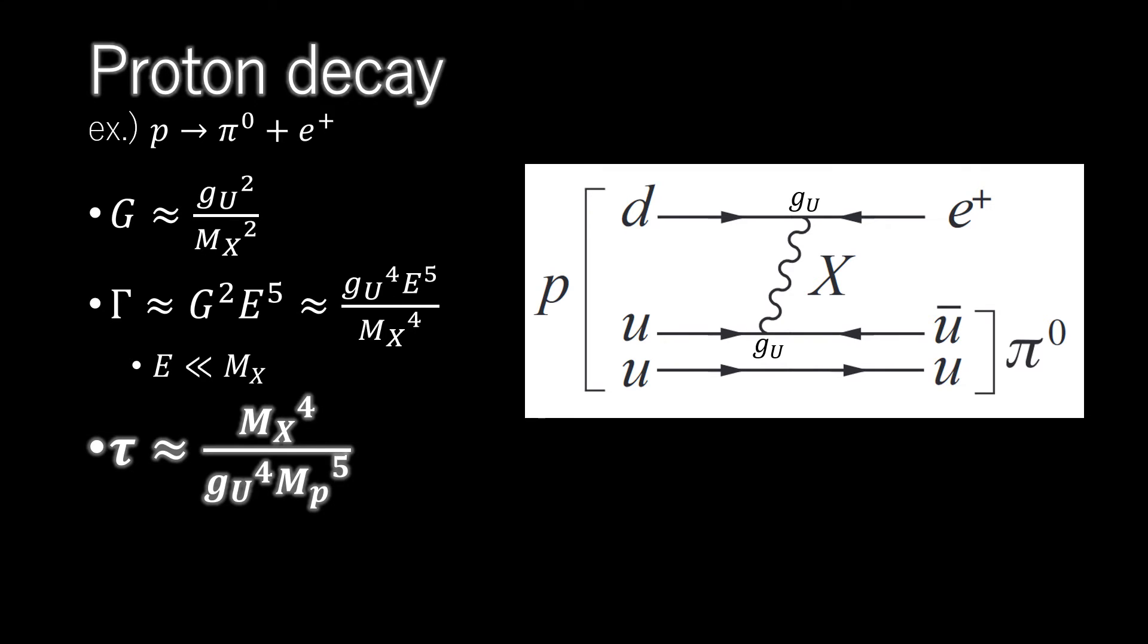These give rise to proton decays such as a proton goes to a neutral pion plus a positron, by mechanisms like those shown in figure. Although the proton is predicted to decay like this, its predicted lifetime is extremely long, and it is useful to make a qualitative estimate to understand why this is so.